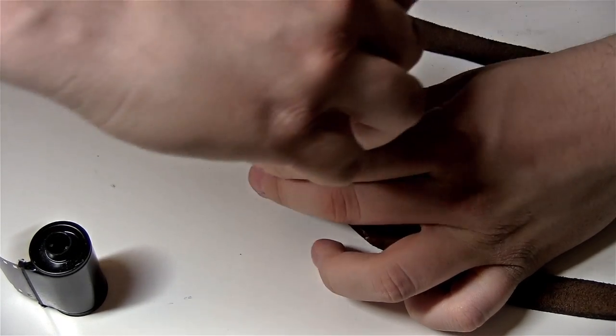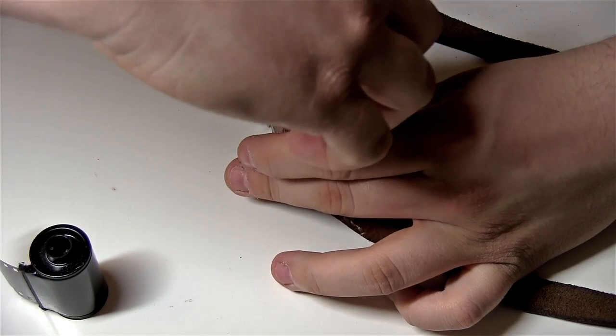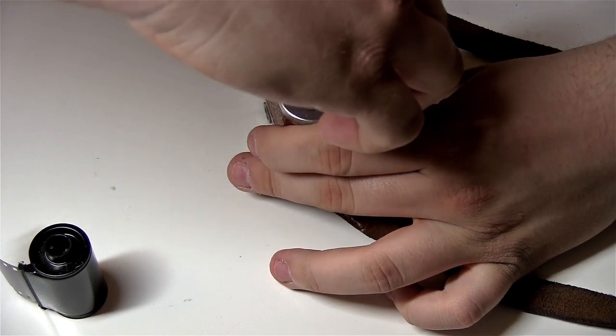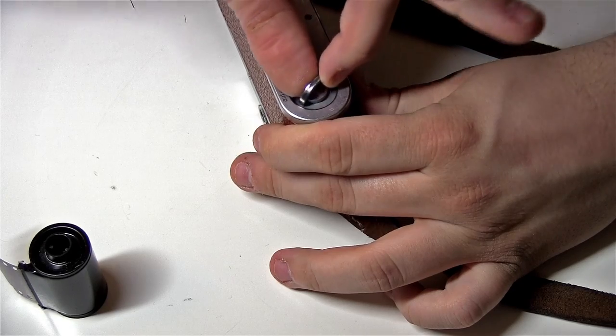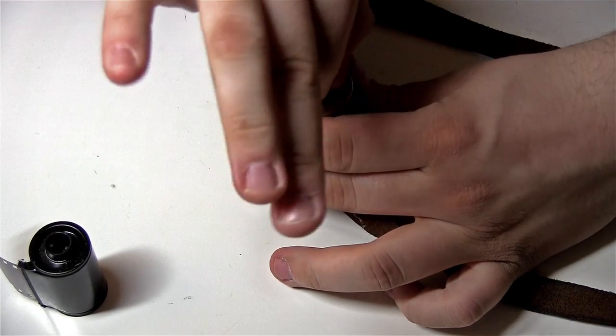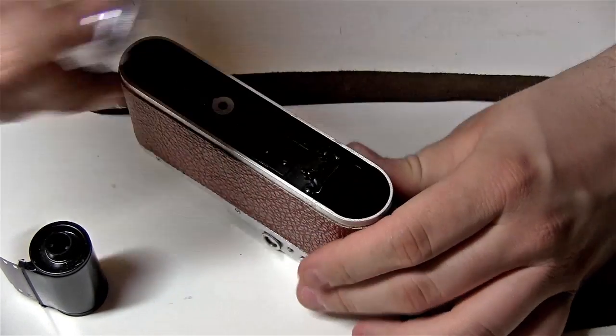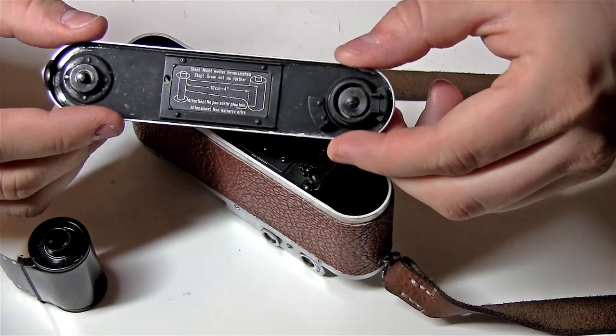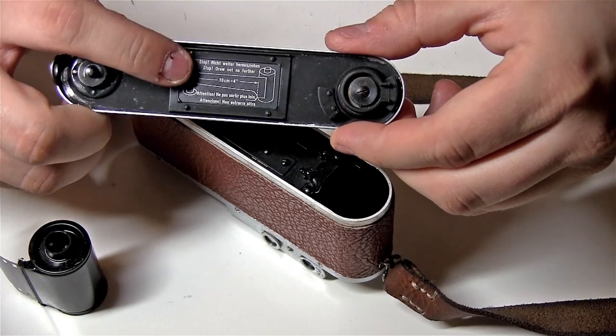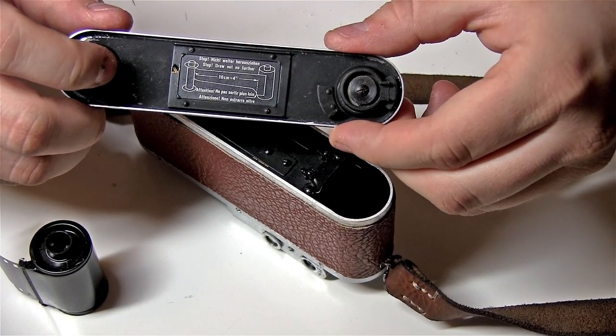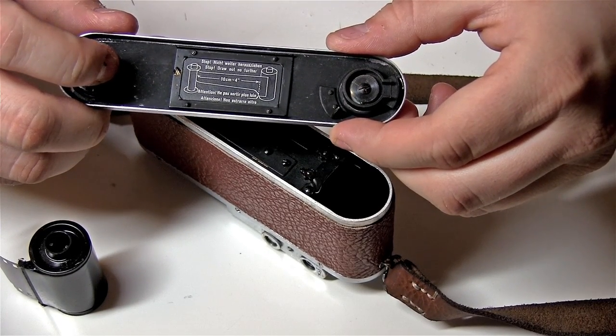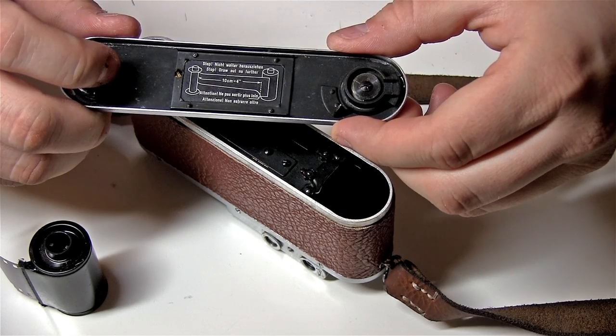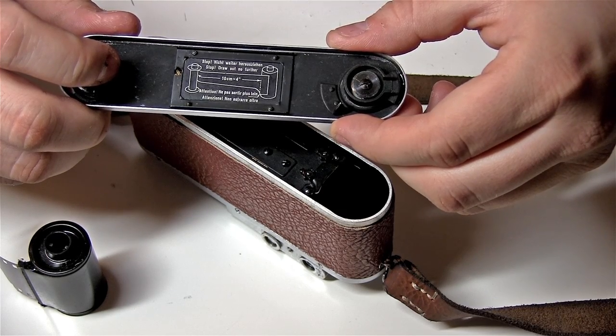To start, we'll open up the back here. On the inside of the bottom plate you can actually see how long the leader was—10 centimeters before—which makes loading the Leica actually possible, but it isn't with a shorter lead.